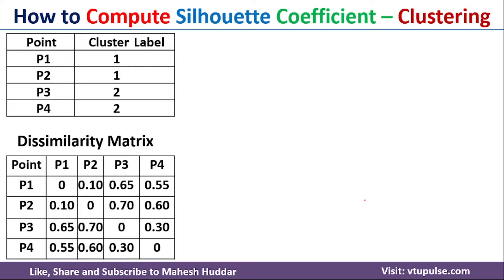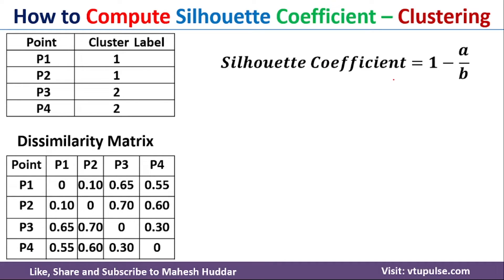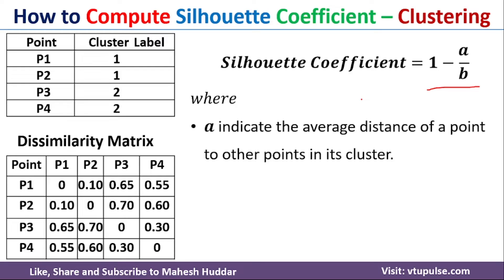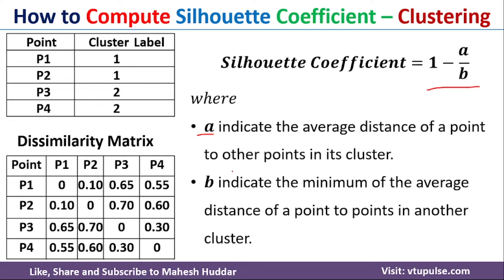First we need to understand how to calculate the silhouette coefficient. The equation is 1 minus a divided by b. Here, a indicates the average distance of a point to all other points in its own cluster. For example, if point P1 is in cluster number 1, we calculate the average distance to all other points in the same cluster — that is a. b indicates the minimum average distance of a point to points in another cluster. We calculate the average distance from a point to all other clusters, and the one with the minimum value is b.